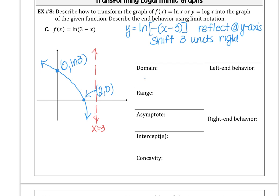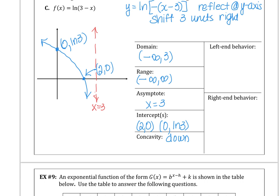The domain is negative infinity to 3. The range is all reals. The vertical asymptote is 3. The x-intercept's at 2,0. The y-intercept is at 0, natural log of 3. The function is still concave down. And what's our reason? Because the rate of change is decreasing.